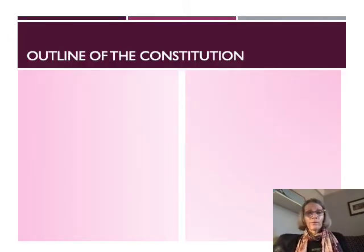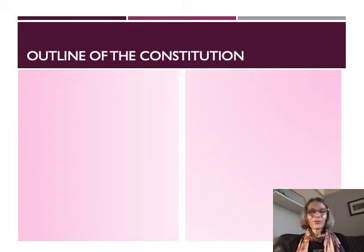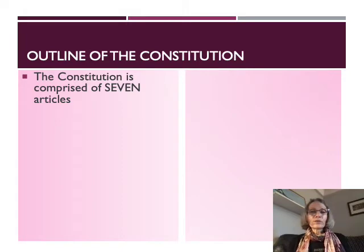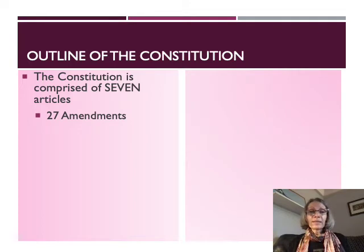Before talking about the goals of the Constitutional Convention, let's look at an outline of the Constitution itself. The Constitution ratified by the states in 1788 was comprised of seven articles. Today we have 27 amendments, so the Constitution is seven articles and 27 amendments. We're going to spend the rest of the semester looking at these different articles, particularly regarding the institutions of government — Congress, the presidency, and the judiciary.